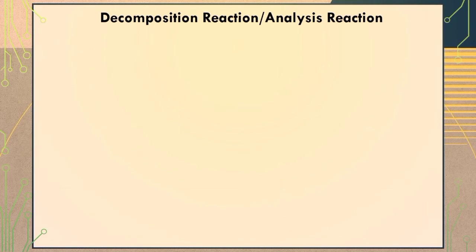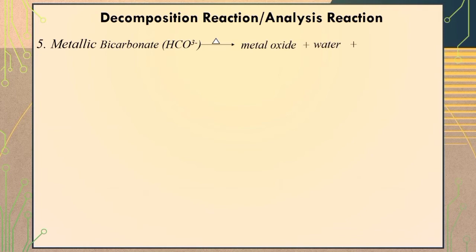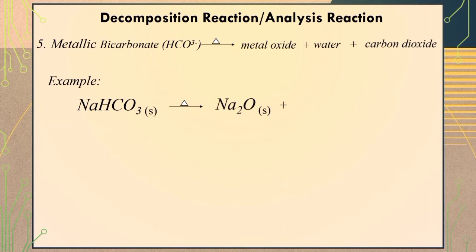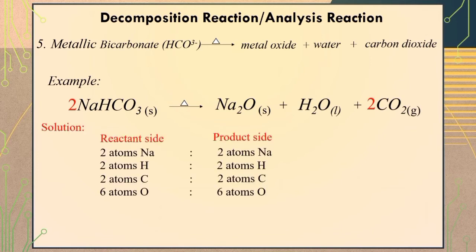The fifth type of decomposition reaction is the decomposition of metallic bicarbonate. When heat energy is applied to metallic bicarbonate, it will dissociate into metal oxide plus water plus carbon dioxide. For example, when heat energy is applied to sodium bicarbonate, it will dissociate into sodium oxide, which is the metal oxide, plus water plus carbon dioxide. To balance the equation, we simply place a coefficient of 2 before the chemical formula of sodium bicarbonate and another coefficient of 2 before the chemical formula of carbon dioxide, giving you 2 atoms of sodium, 2 atoms of hydrogen, 2 atoms of carbon, and 6 atoms of oxygen both on the reactant and product side.